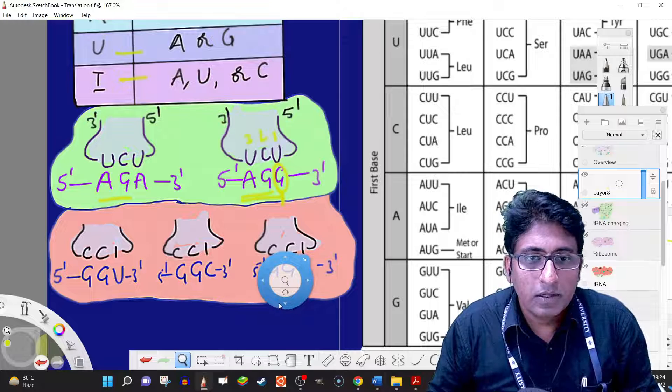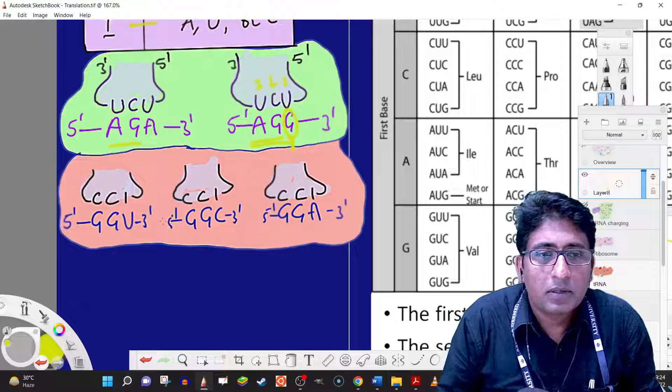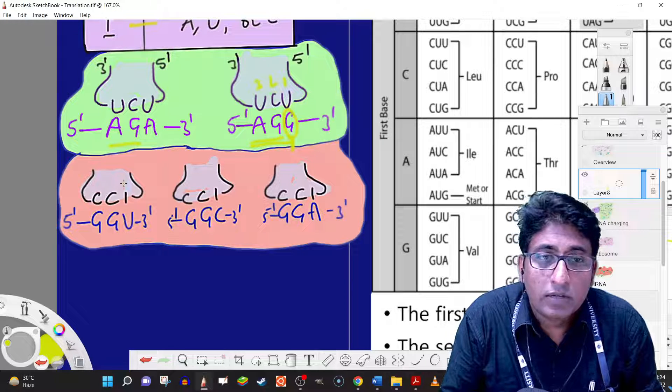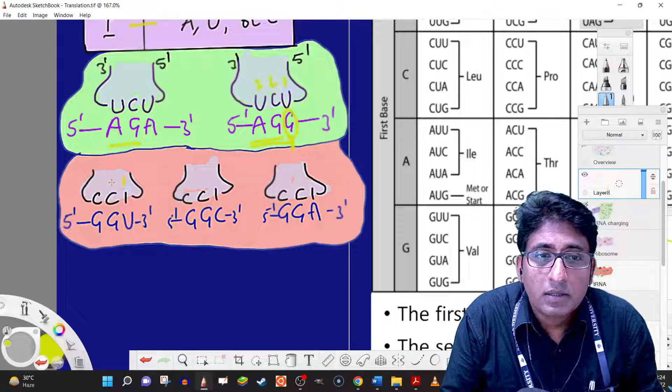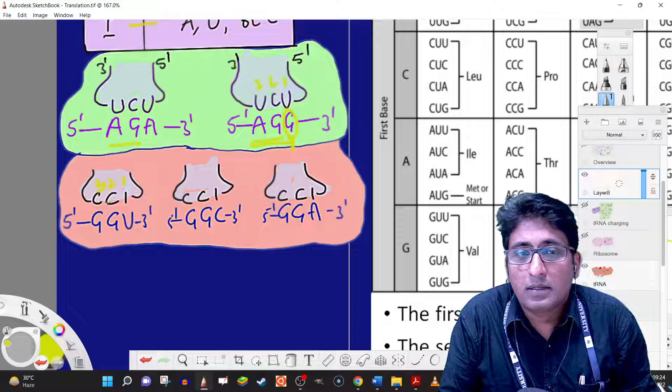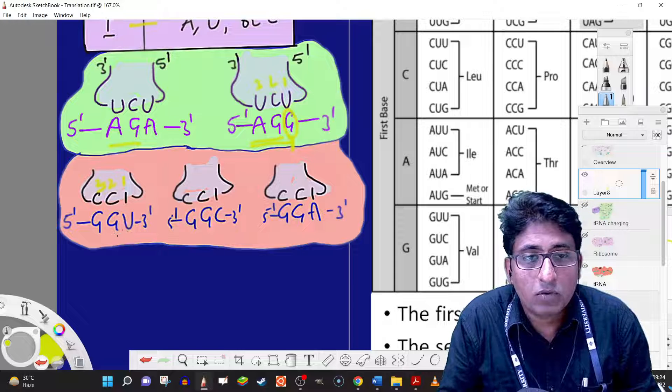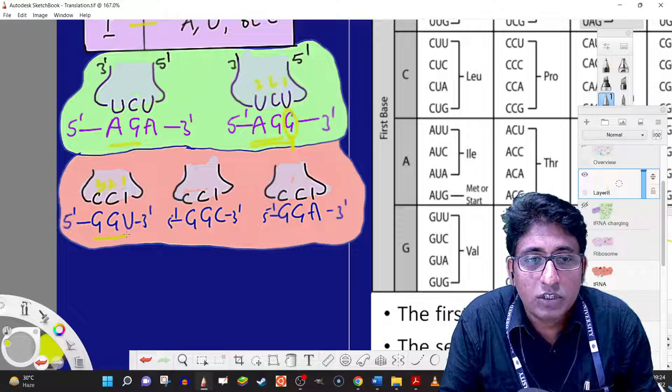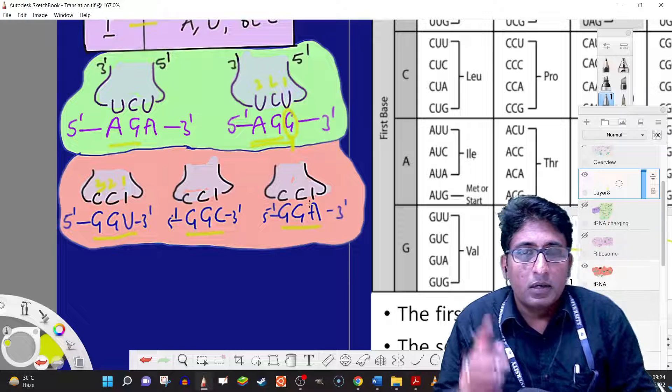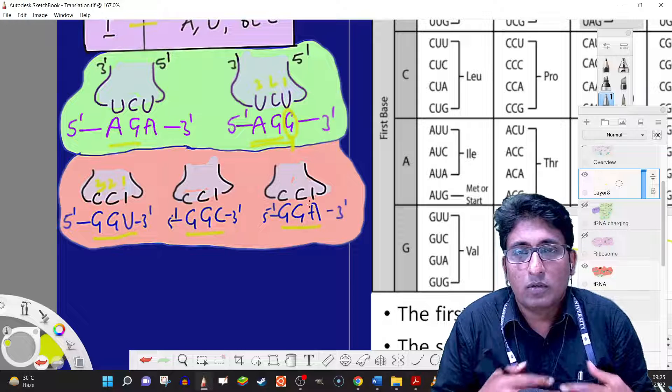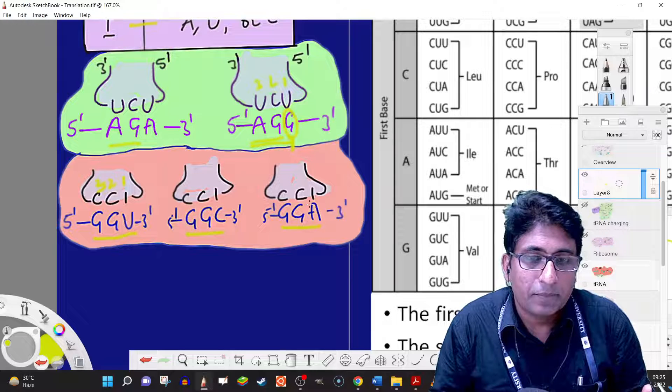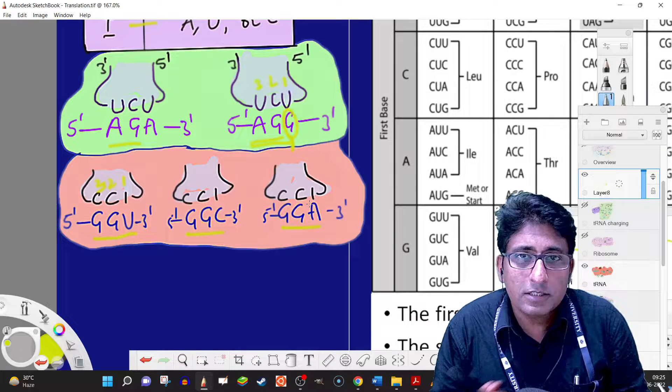Here is another example with inosine-cytosine-cytosine (ICC) as the anticodon. The codon is GGU, and here is another GGC and GGA. In the third position of the codon, the base is different, but the rest is the same.